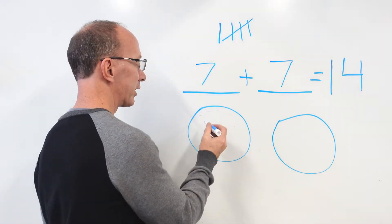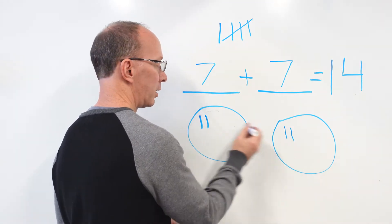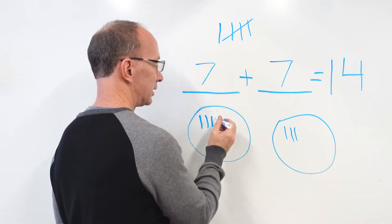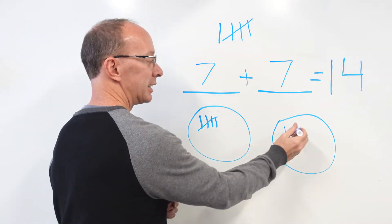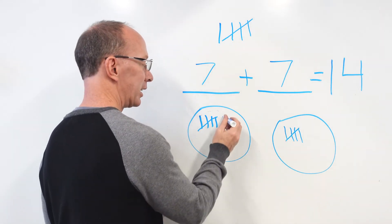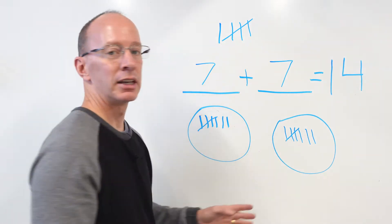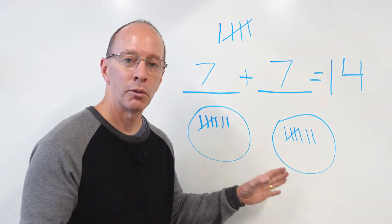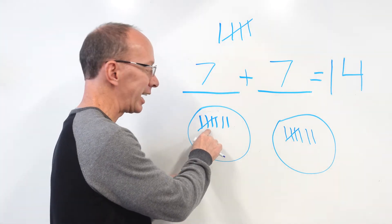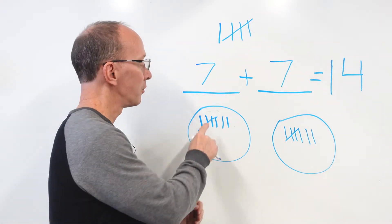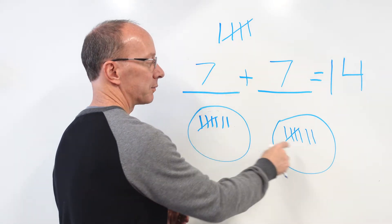Let's count it out again: 1, 2, 3, 4, 5, 6, 7, 8, 9, 10, 11, 12, 13, 14. So much easier to read because I have a group of 5 here — so I go 5, I don't have to count them out, then 6, 7. And 5, 6, 7 on the other side.